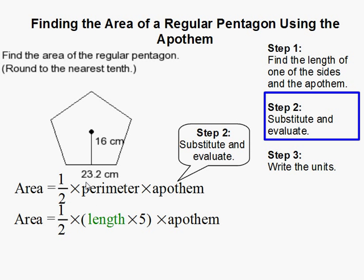Alright, now the perimeter, as you can recall, is the length times 5. It's times 5 because there's 5 sides.